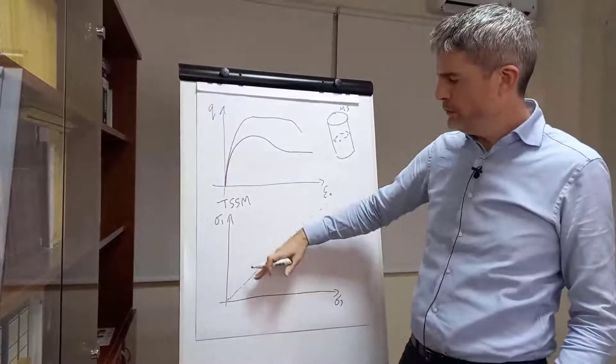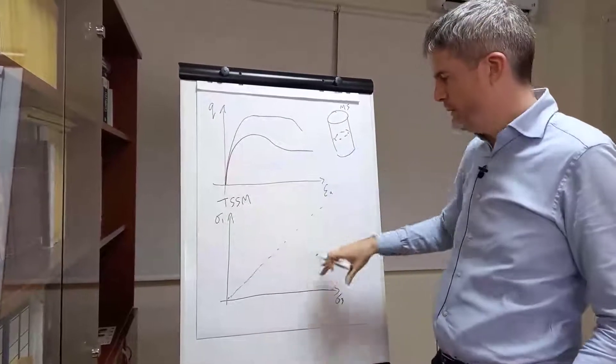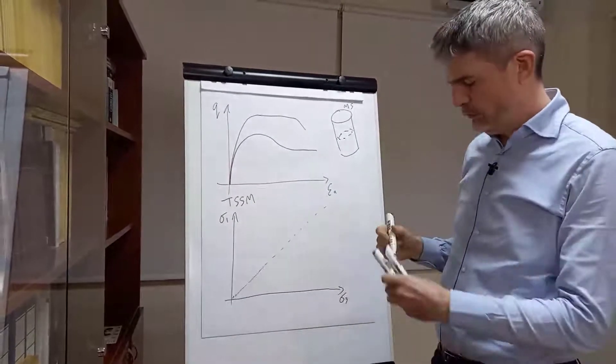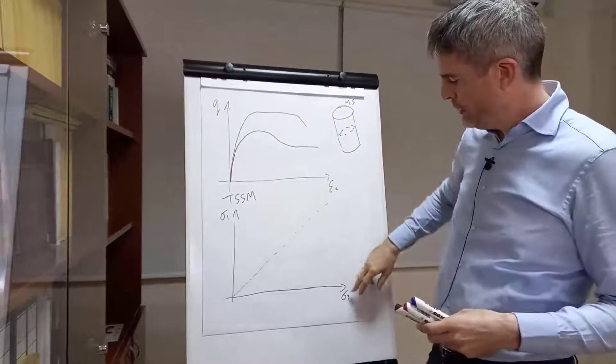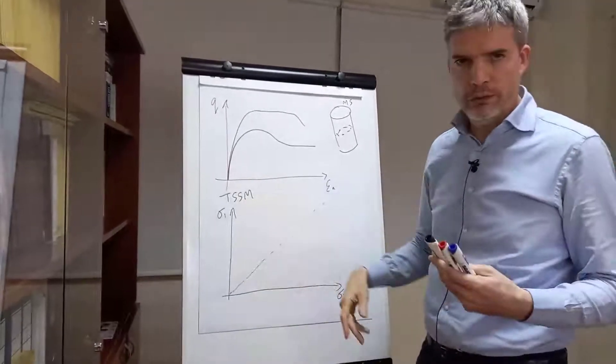It's not quite the friction angle that you see there, because it's not Mohr stress space. It's slightly different stress space, but it looks very similar. I've plotted it like this, because this is how the model is formulated.